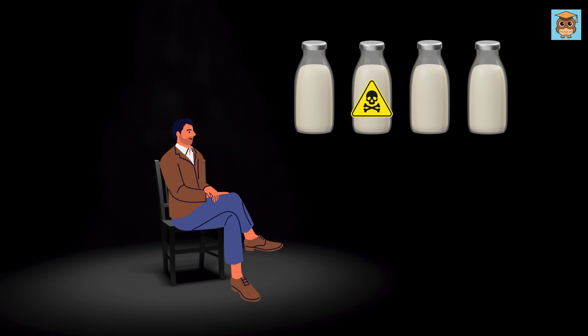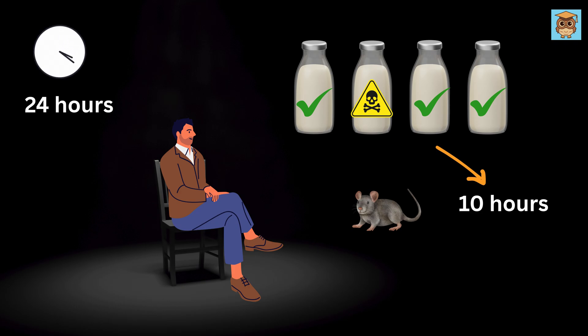Sadly you have no one other than a rat to test the milk, but the poison's effect shows up only 10 hours after it's fed. You need to drink three safe bottles of milk in the next 24 hours or you will die. You are also given a timer. So how can you find three safe bottles?